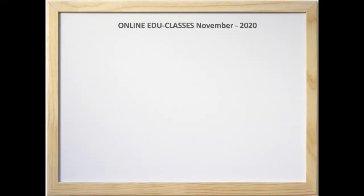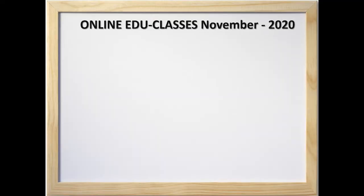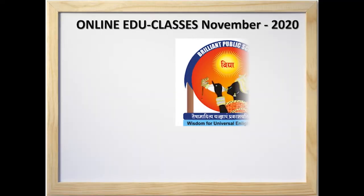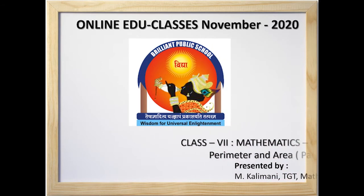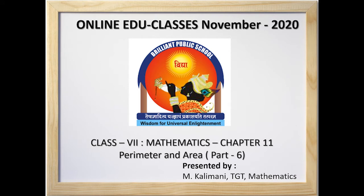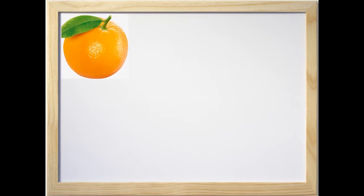Hello children, welcome to Online Edu Classes. Today we are going to learn Chapter 11: Perimeter and Area, Part 6. I'm going to show a very interesting object — yes, it is an orange. You must be wondering what I'm going to do with an orange in a mathematics class. We will soon find out.